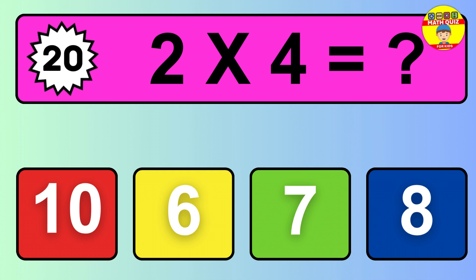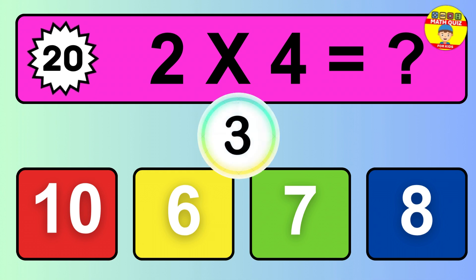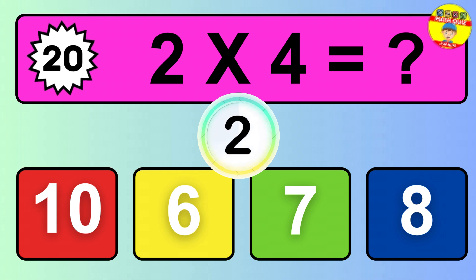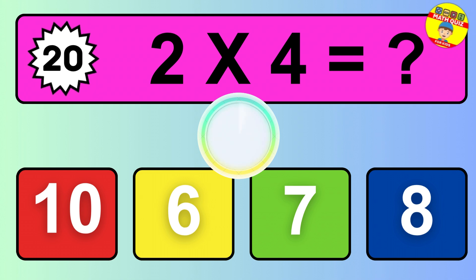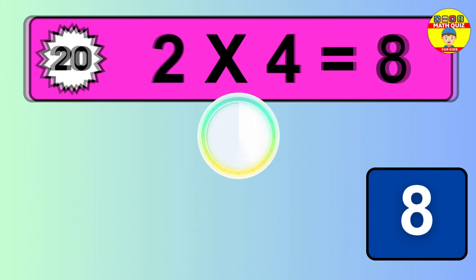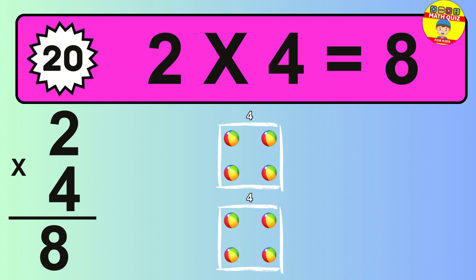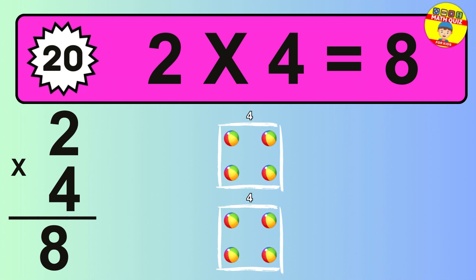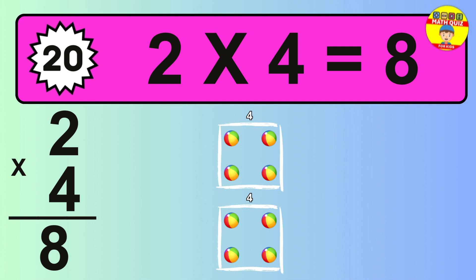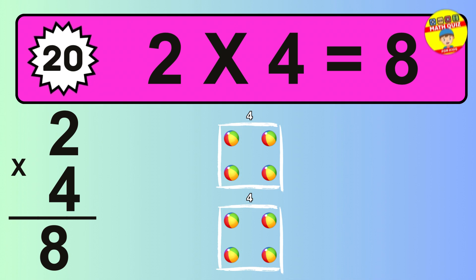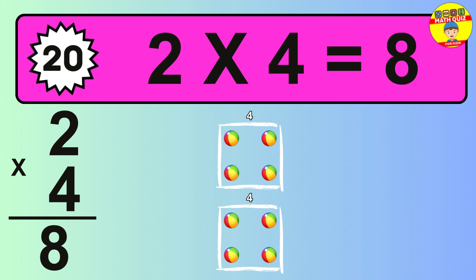Question 20. 2 times 4 equals what? The answer is 2 times 4 is 8. To calculate, we have 2 groups with 4 balls each one. So how many balls do we have? 8 balls.